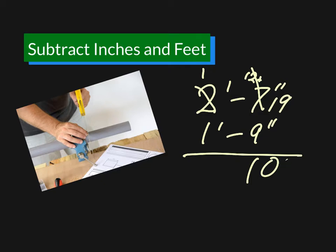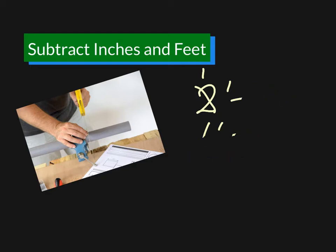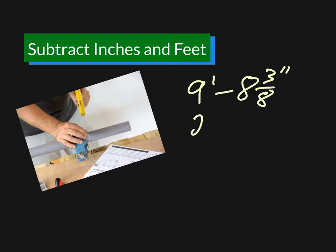But what if the inches contain fractions? Now we have to subtract fractions of an inch as well. Let's say that the length of our pipe is actually 9 feet 8 and 3 eighths inches. And the piece that we're cutting off is going to be 2 feet 5 and 1 eighths inches.